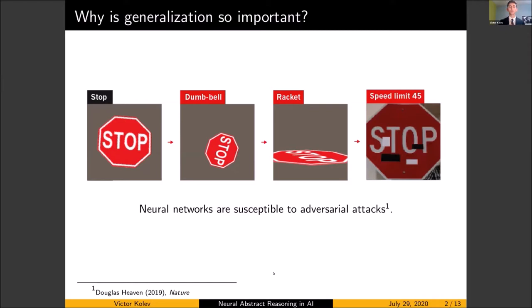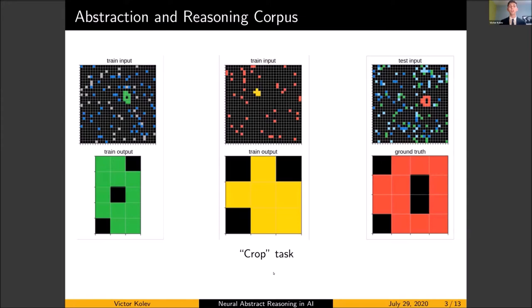Now in order to measure performance on generalization, Francois Chollet developed the abstraction and reasoning corpus. This is a data set that consists of around 800 tasks, and each of them is basically a logical puzzle that the neural network needs to solve. It is actually very similar to an IQ test. IQ tests are quite a familiar measure of human intelligence, and so if a neural network can solve this data set which is similar to IQ tests, then we can say it is much closer to general intelligence.